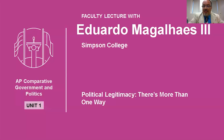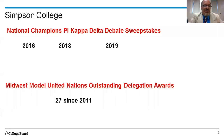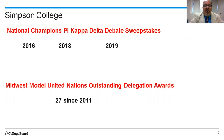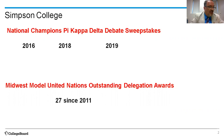Hi there. My name is Eduardo Magalhães III. I'm a professor of political science at Simpson College. I'm starting my 30th year teaching here at Simpson, so I'm somewhat of a seasoned veteran in terms of teaching. Simpson College is a small liberal arts college just south of Des Moines in central Iowa. It is the home of the reigning two-time national champion Pi Delta Kappa debate team — three of the last four years we've won the national championship. It is also the home of a Model UN team that has won 27 outstanding delegation awards in the last 10 years. I'm very honored to be involved in both programs and very excited to be here on behalf of Simpson College and College Board to talk to you about comparative politics.